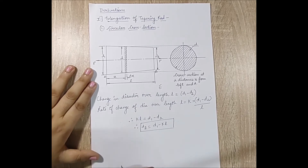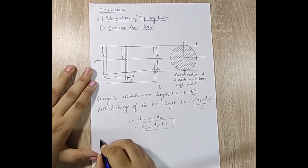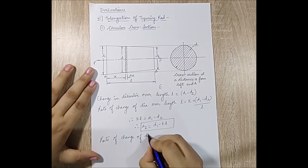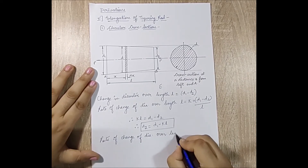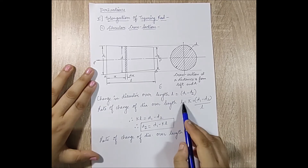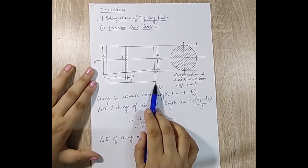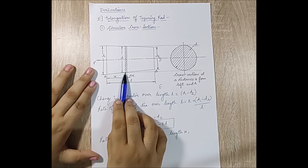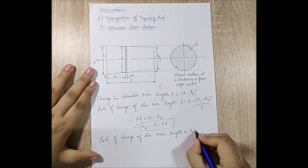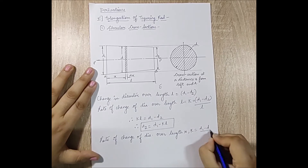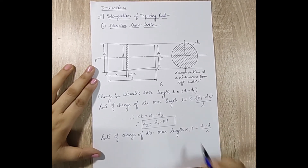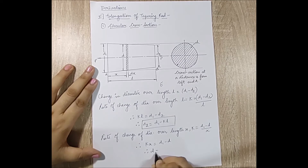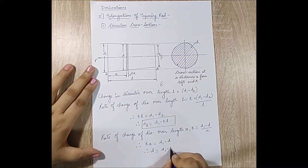Now I calculate the rate of change of diameter over length x. The initial diameter is d1, and at distance x the diameter is d. So k = (d1 - d) / x, which gives k·x = d1 - d, and therefore d = d1 - k·x. I will use this expression for d shortly.